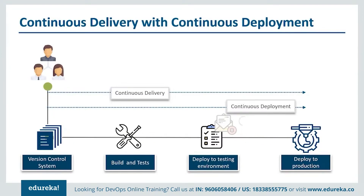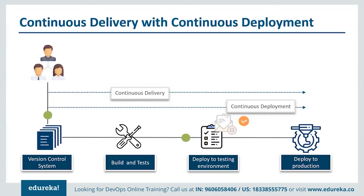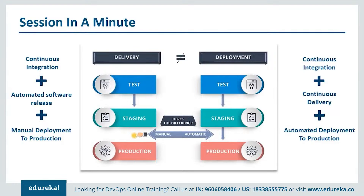The goal stands the same: make the software development and release process faster and more robust. Continuous delivery is a capability you must have, and continuous deployment is an option you might choose to exercise based on the kind of product you have. In short, continuous delivery is continuous integration plus automated release of the software plus manual deployment to production. Continuous deployment is continuous integration plus continuous delivery plus automated deployment to production.